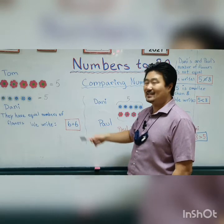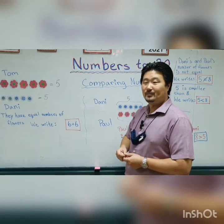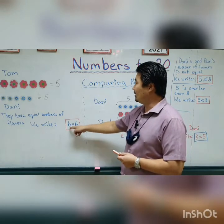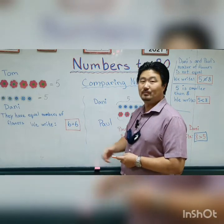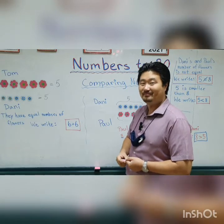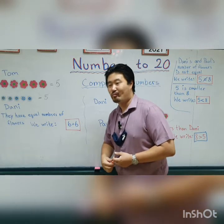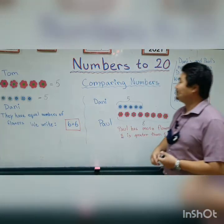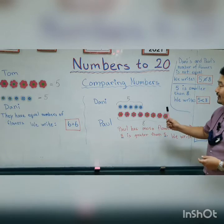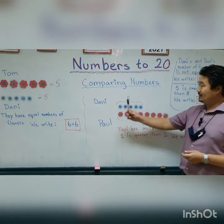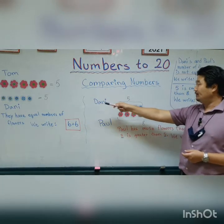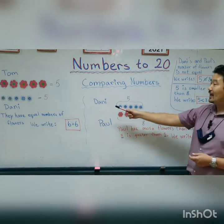So when we are talking about the same number — they have the same number of items, in this case flowers — then we write it as six equals six. We have the same number, equal number.